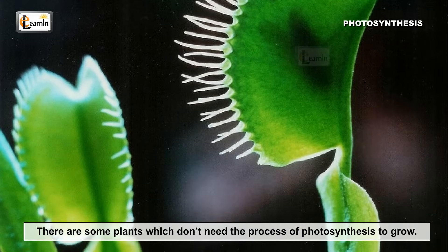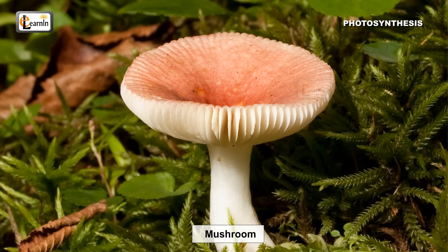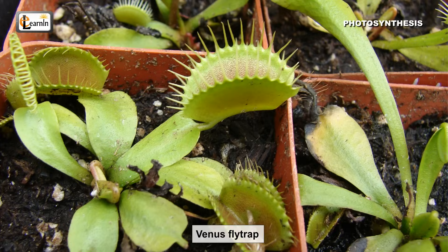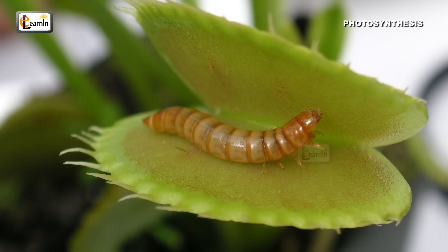There are some plants which don't need the process of photosynthesis to grow. Such plants include mushroom, venus fly traps, etc. Mushrooms get their food from the ground and from their surrounding areas. Venus fly traps trap and catch small insects which come near the leaves and eat them.